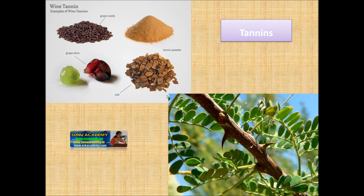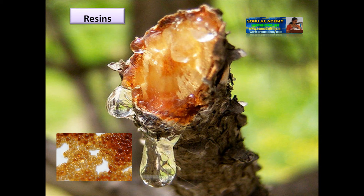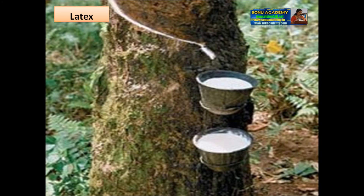Points to be remembered in this lesson: Alkaloids are nitrogenous compounds and they are poisonous. Tannins are carbon compounds. Resins are secretory substances formed in resin passages and are found mainly in gymnosperms. Latex is a milky white or yellow liquid present in latex cells or passages in plants.